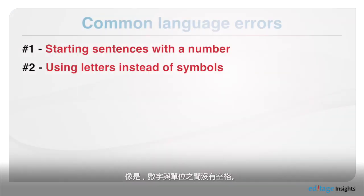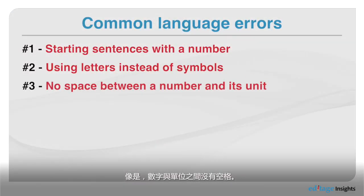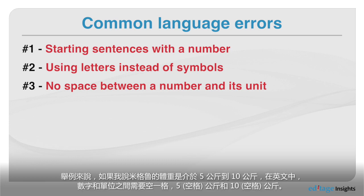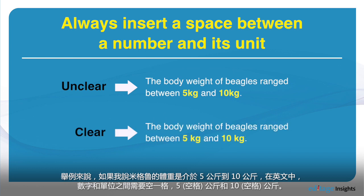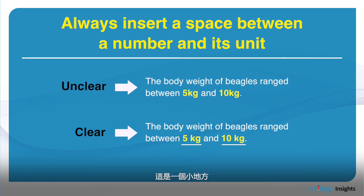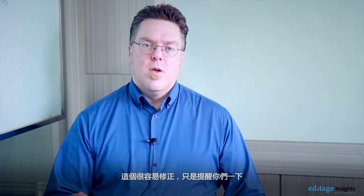Mistake number three deals with differences between English and Korean, English and Chinese, and English and Japanese — there are no spaces between numbers and units. When looking at an example: 'The body weight of beagles ranged between five kilograms and ten kilograms,' there needs to be a space between the number and the unit — five space kilograms, ten space kilograms. It's a simple thing, but when a reviewer is reading your paper, it doesn't look good. It's easy to fix, but it's a mistake that people commonly make.